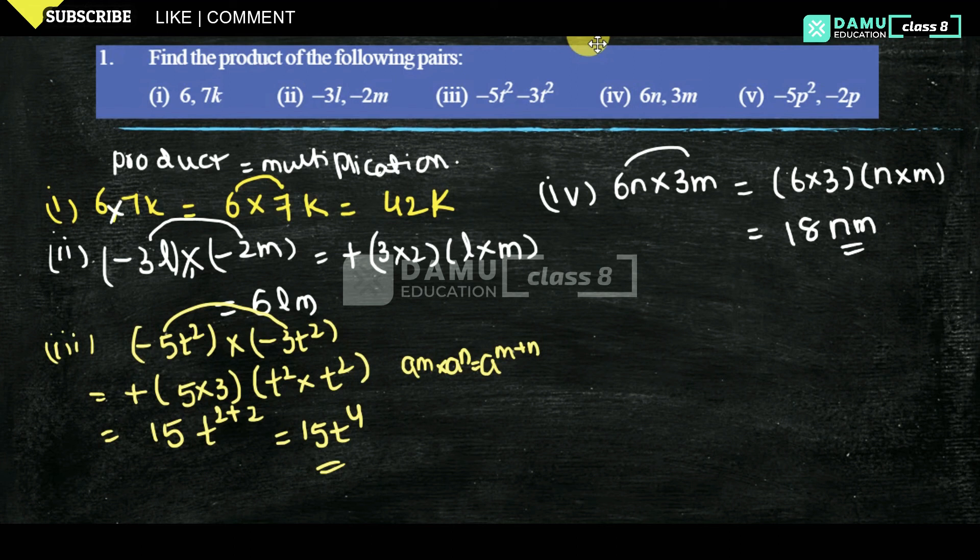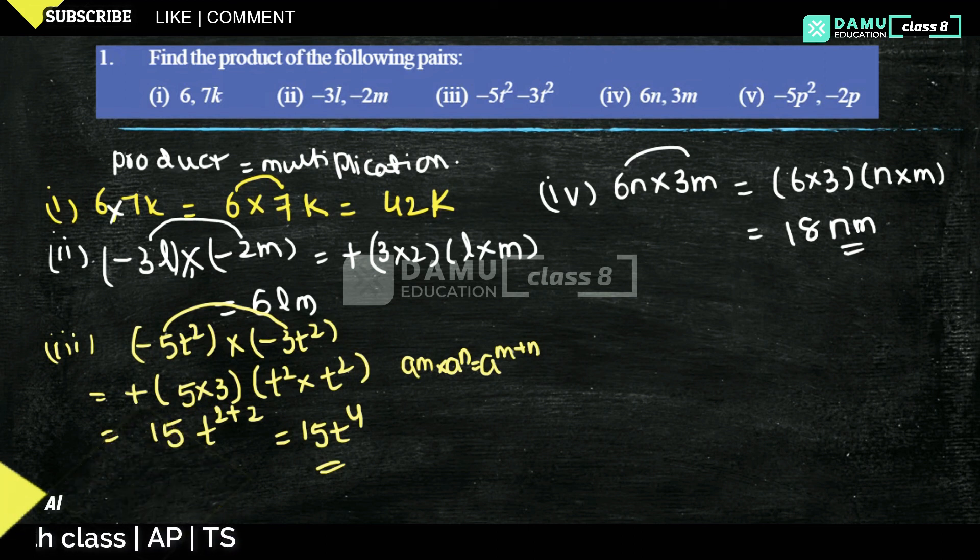So whatever numbers are there, that one we have to first multiply and then with the variables. Next one.